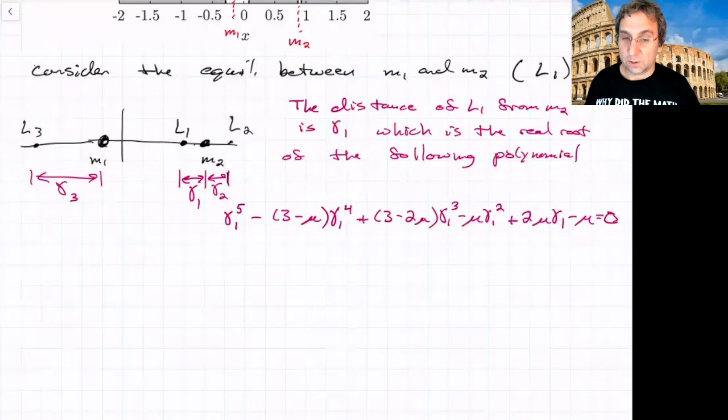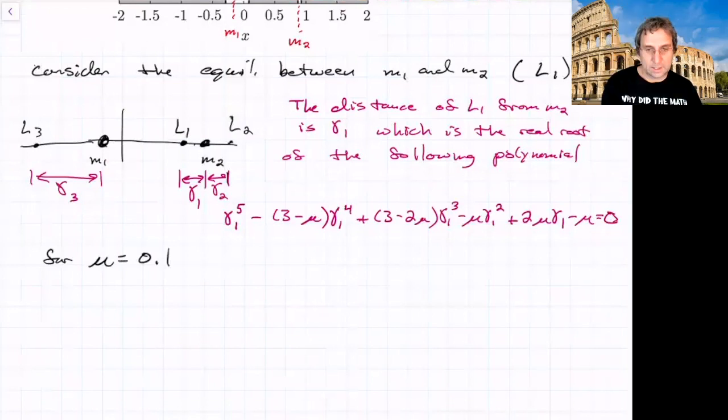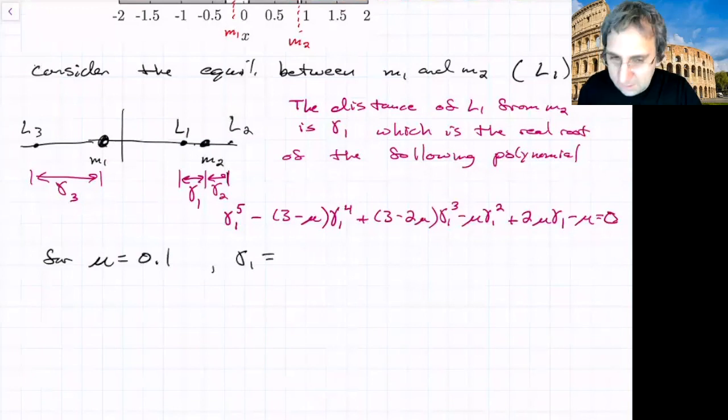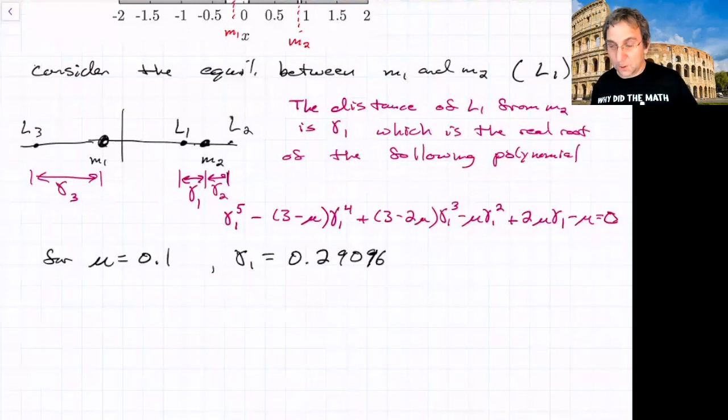You could solve this polynomial. We could code this up pretty easily in MATLAB and find it. Let me calculate this for something simple. I'm going to use mu of 0.1, which is pretty large, very large. Then gamma 1 equals, to several digits, 0.29096. The distance between the two primaries is 1, so that means it's almost 30% of the way to M1.